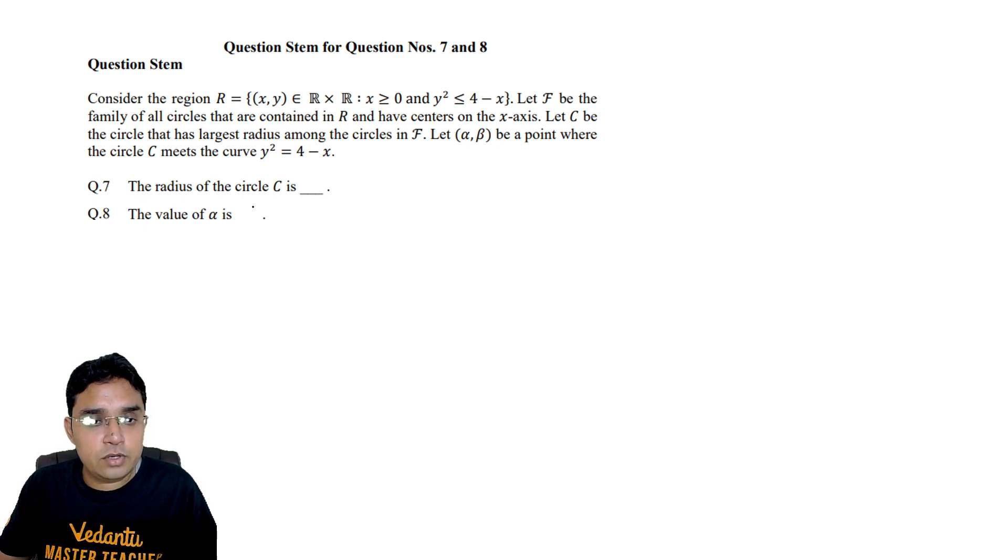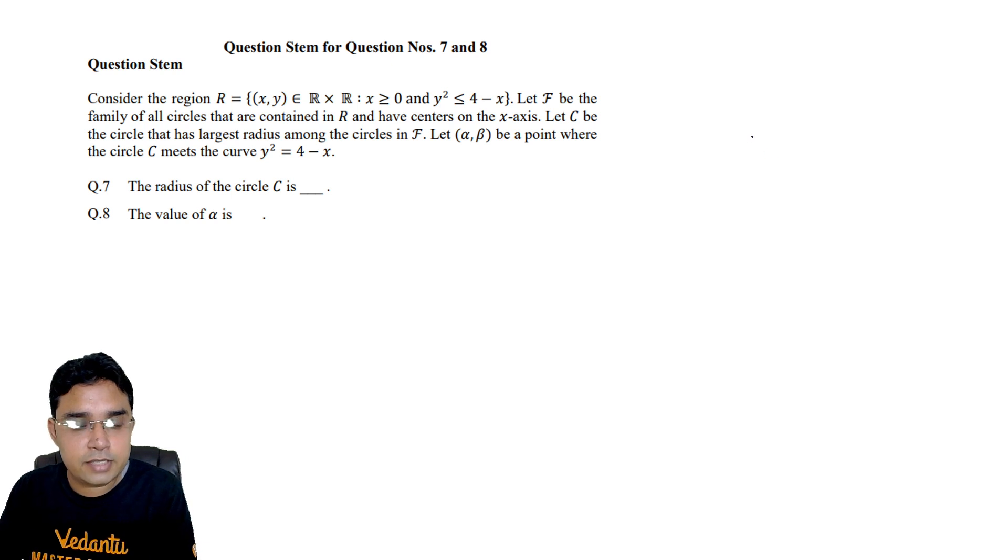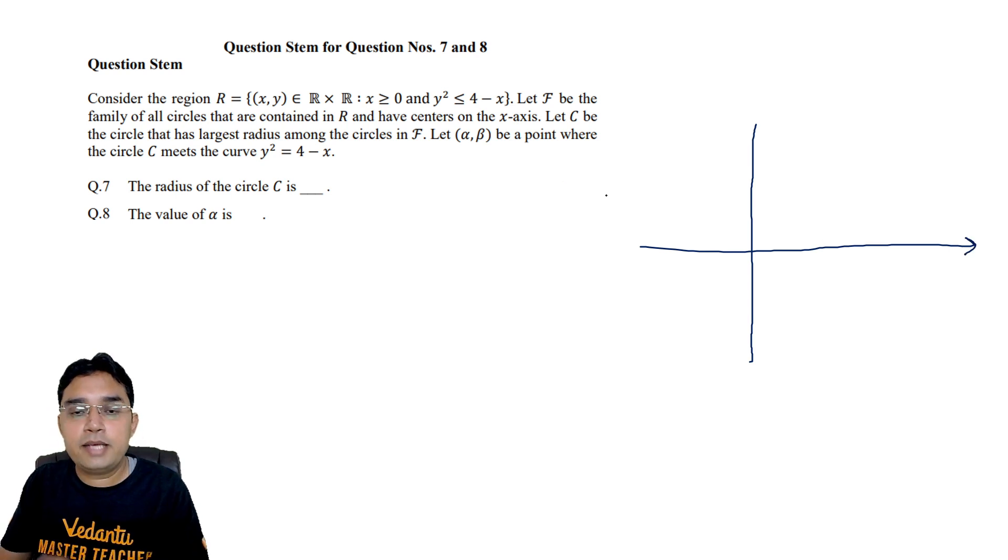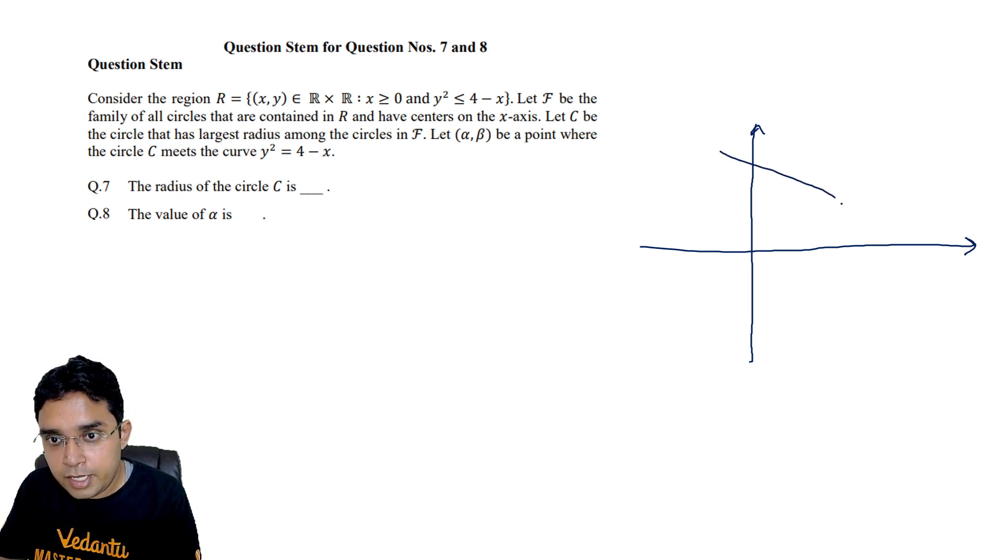Then we have to find the radius of circle c and the value of alpha. Now first of all let us understand what is the region r. Region r is having two boundaries. One is x greater than or equal to 0, so y axis is here, and another one is the equation of parabola which is leftward parabola like this. This point will be 4,0.